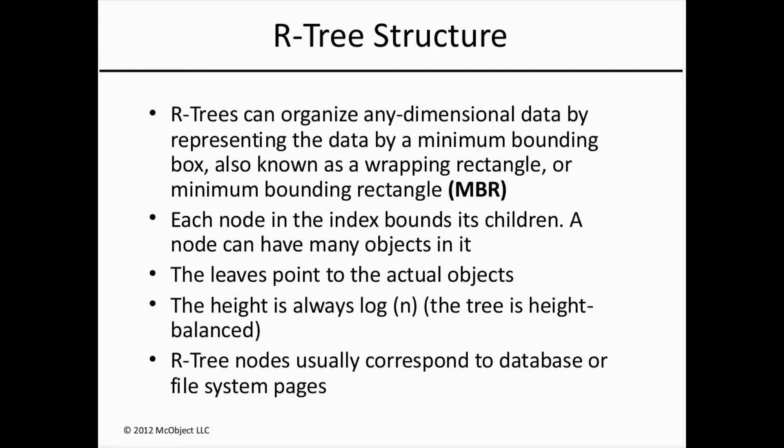Each node in the index bounds its children. Like the nodes of other index types, a node can have many different objects in it. The leaves of the tree point to the actual objects. The height is always log n — in other words, the tree is height balanced. As with other tree indexes, the R-tree nodes usually correspond to database or file system pages.